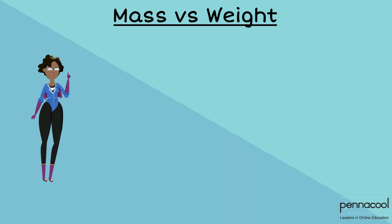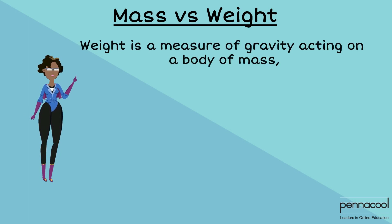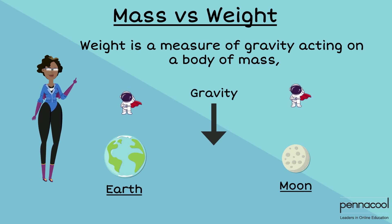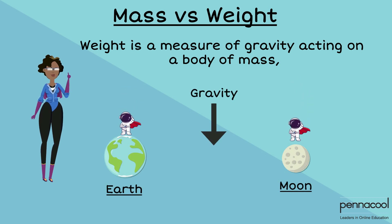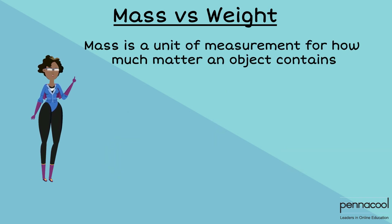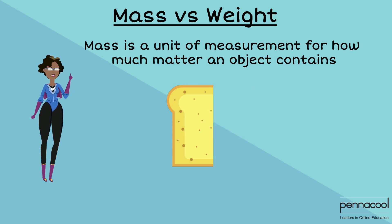Let's start off by understanding the difference between mass and weight, because they are not the same thing. Weight is a measure of gravity acting on a body of mass, which means that weight changes if you leave planet Earth. On the other hand, mass is a unit of measurement of how much matter an object contains. The mass of a body doesn't change unless you take away part of the object.